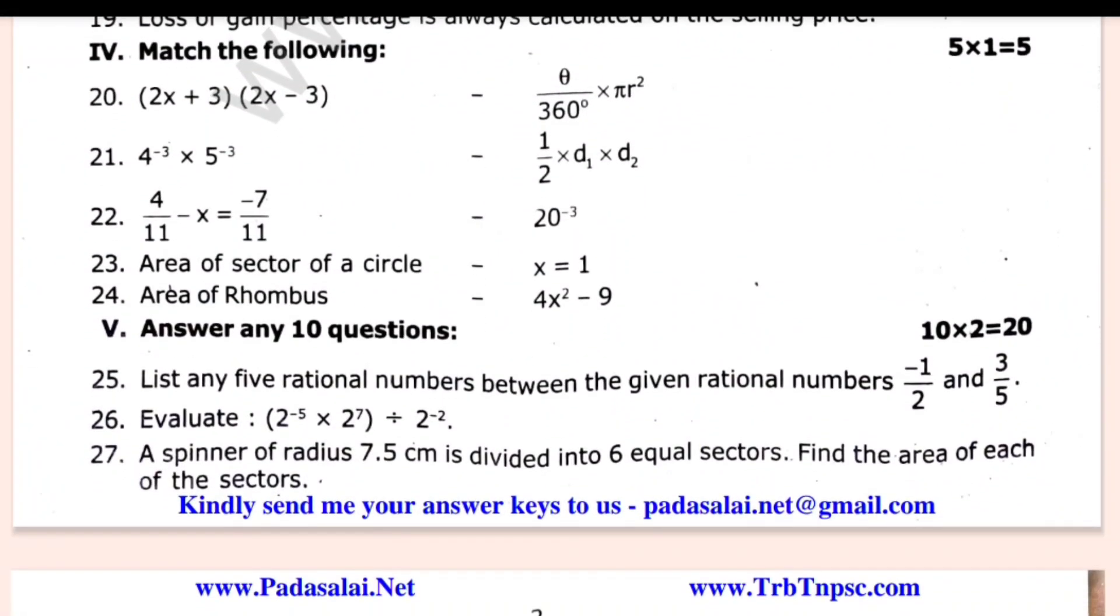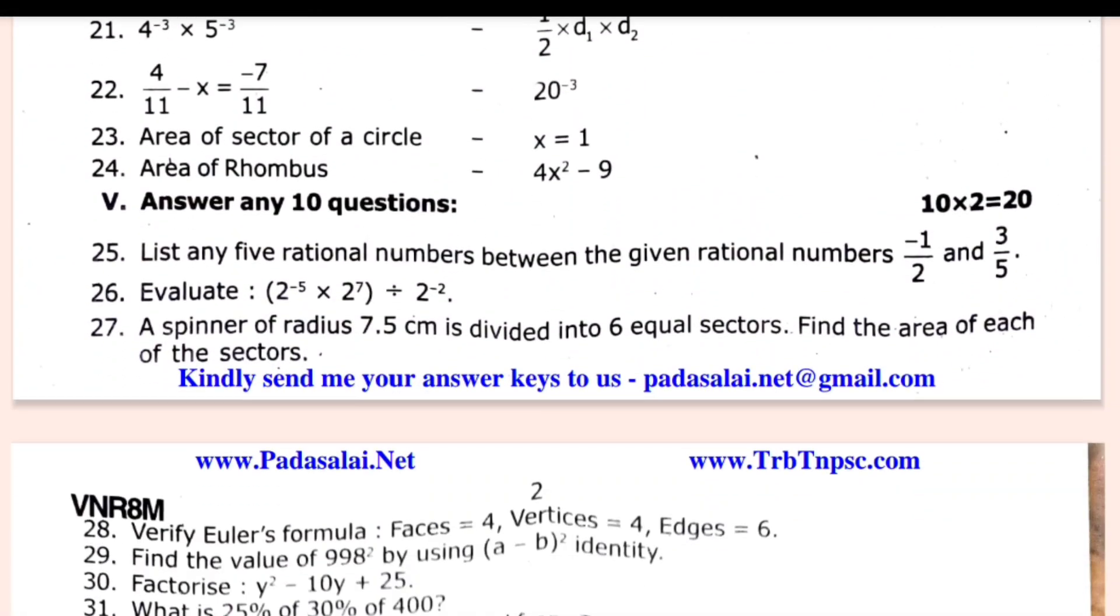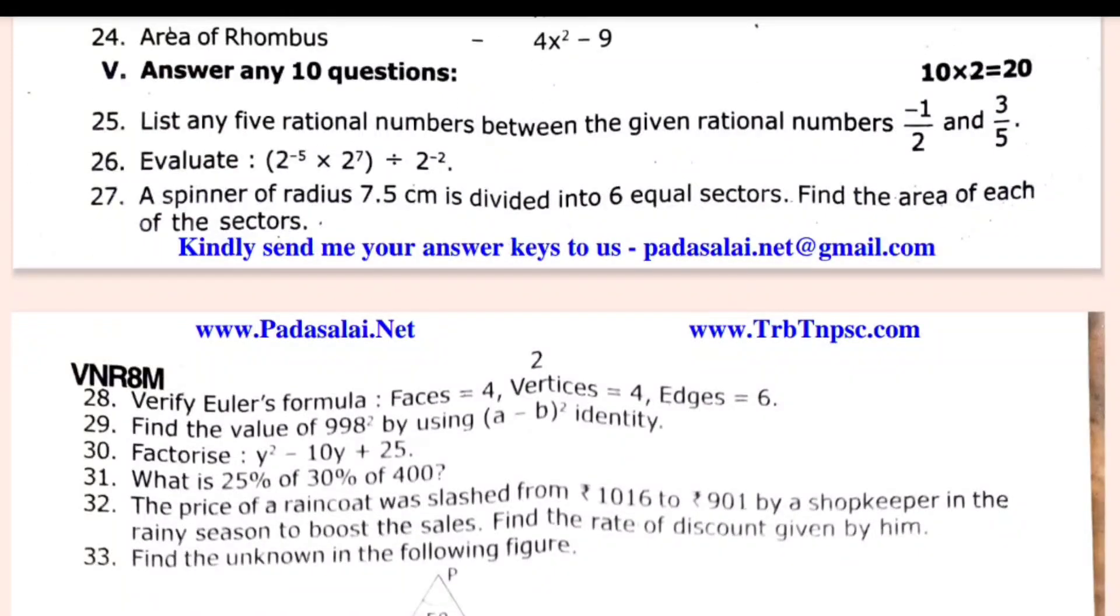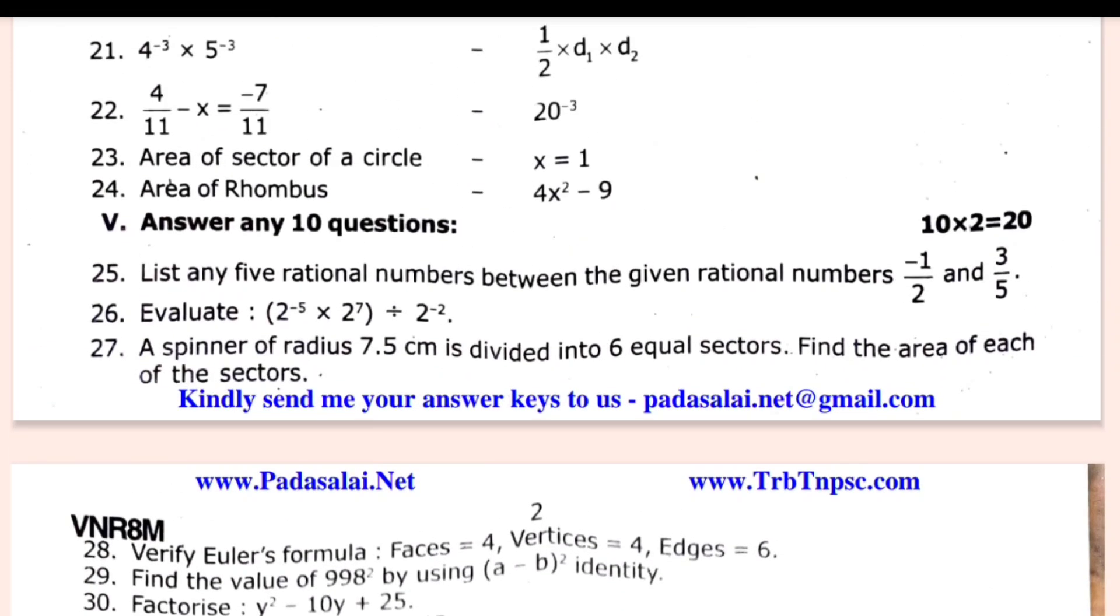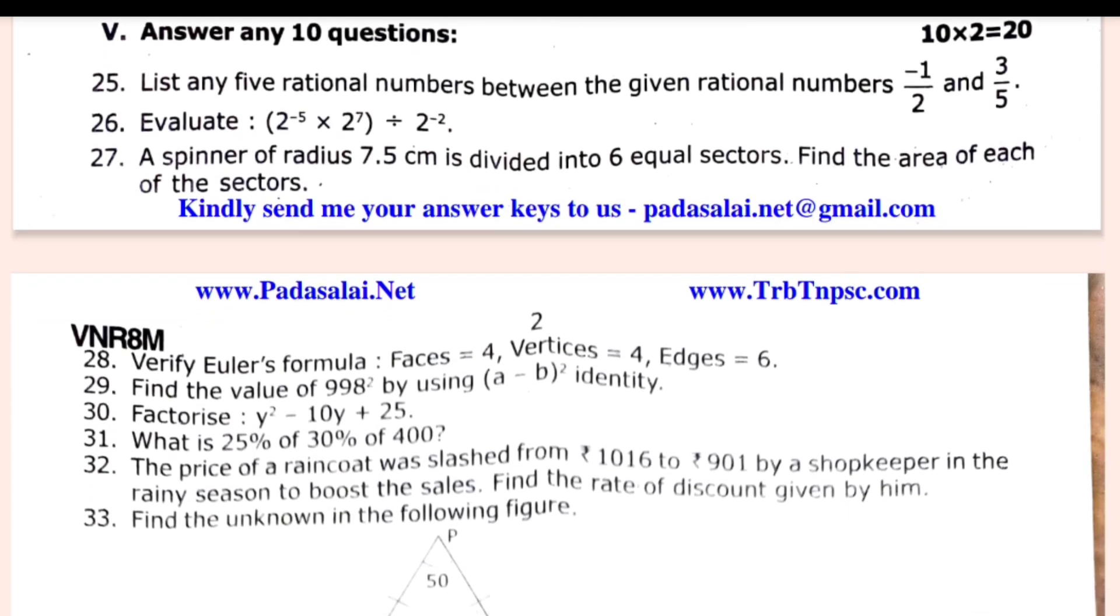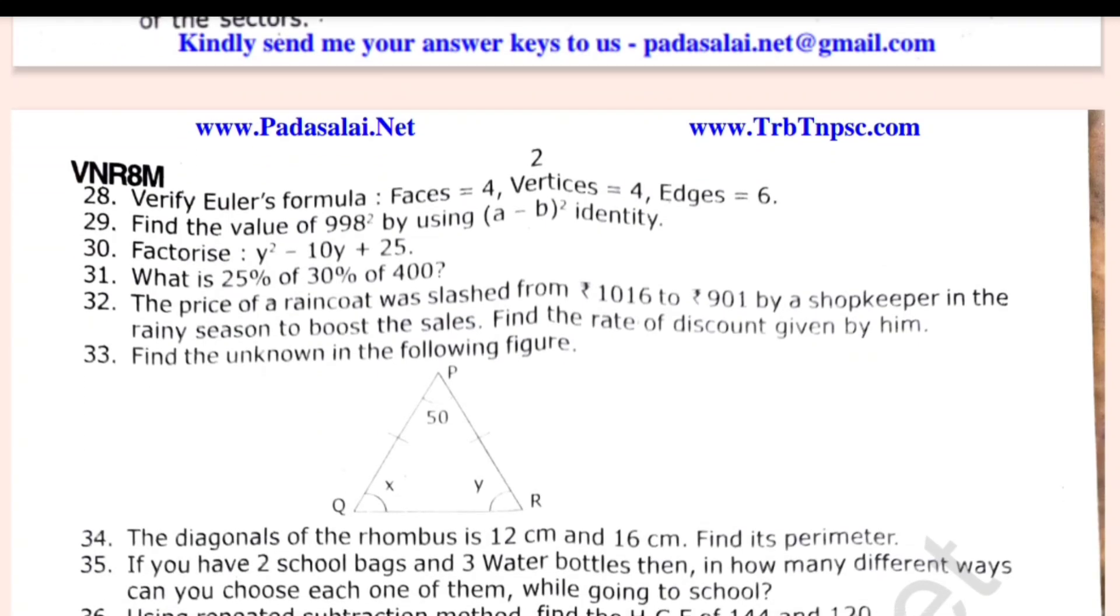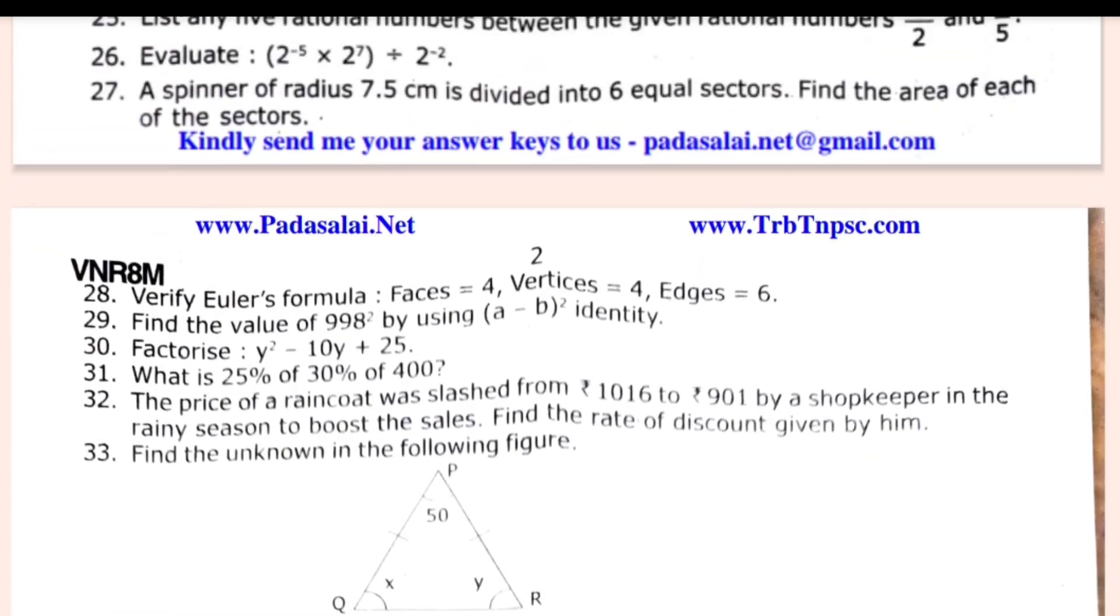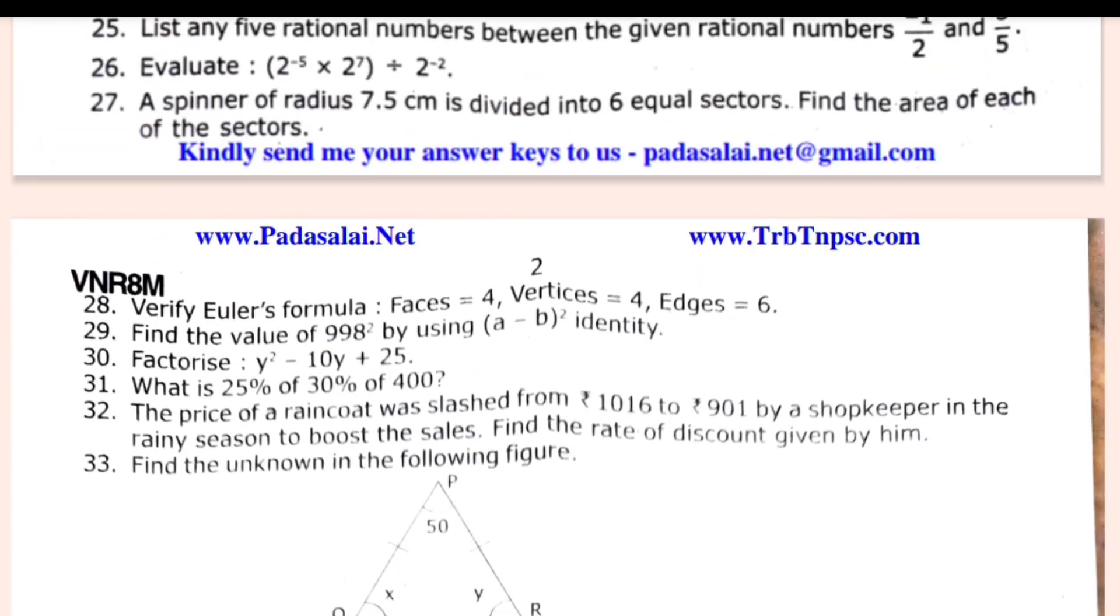If you have total 11, you can send 10. That is 3.85. Second one is 3 and 5, 1.85. What is 25% of 30% of 400? Find the unknown in the following figure. Using repeated subtraction method, find the HCF of 144 and 120.